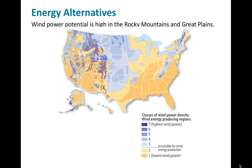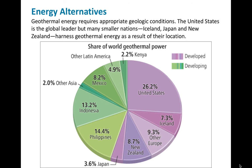The potential wind power in the United States is specifically strong across the Rocky Mountains and the Great Plains. If we were able to set up wind farms in those areas, we'd have great potential to power quite a bit of our energy needs. Geothermal energy requires appropriate geological conditions. The United States is a global leader, but many small nations can do this as well — places like Iceland, Japan, and New Zealand harness geothermal energy from their location and position on the earth, largely tied to volcanic activity.